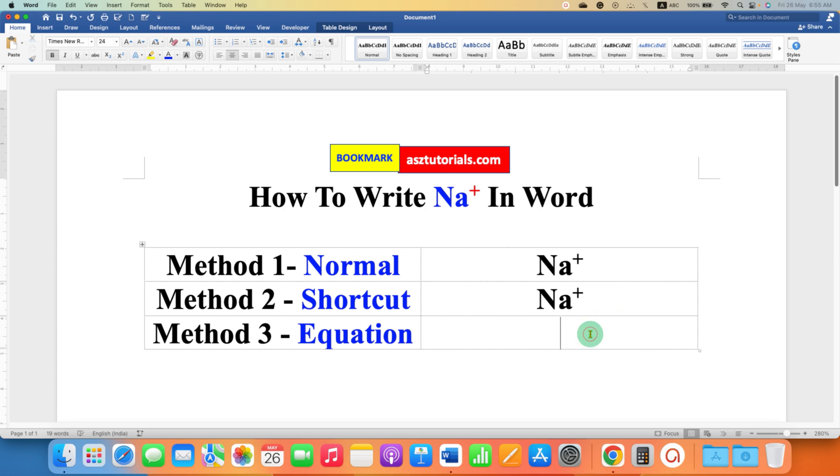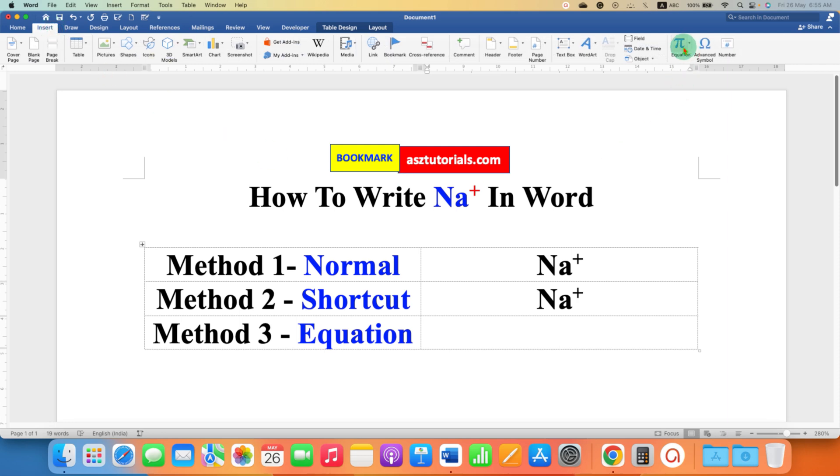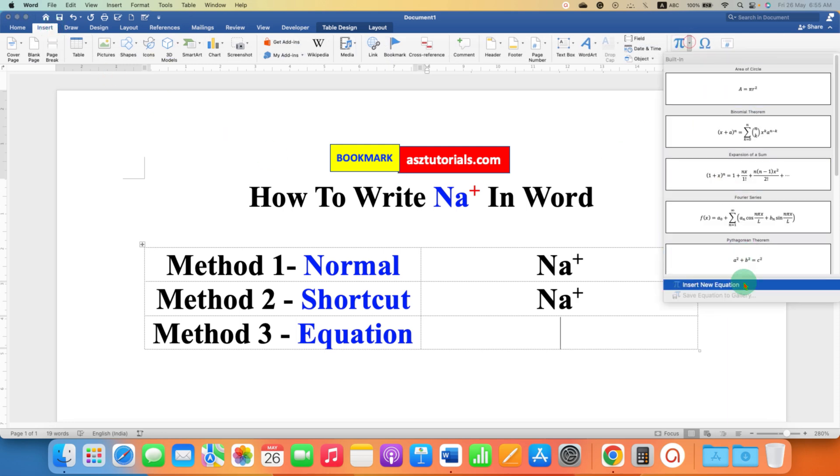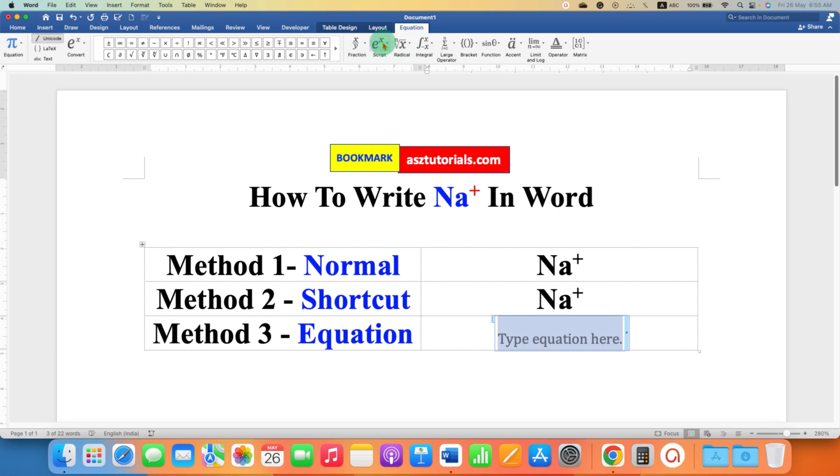In the last method, if you are writing a chemical equation, then go to the insert tab and under the equation, select new equation. Go to the script option here and select the first option superscript. Now, you can type Na and in the next box type plus.